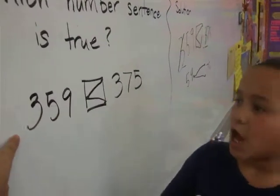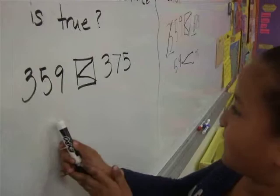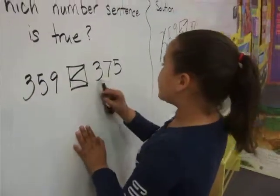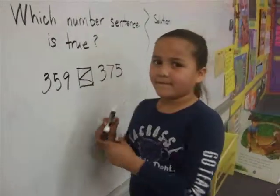So your answer is? 359 is less than three hundred seventy-five. Bye.